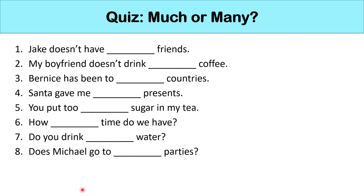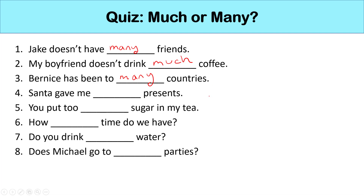So now let's correct these together. Number one: Jake doesn't have many friends — friends is a countable noun, so we use many. Number two: my boyfriend doesn't drink much coffee — coffee is an uncountable noun, so we use much. Number three: Bernice has been to many countries — countries is countable. Number four: Santa gave me many presents.